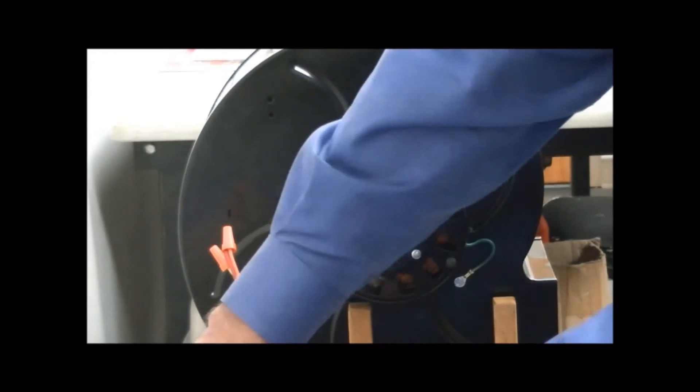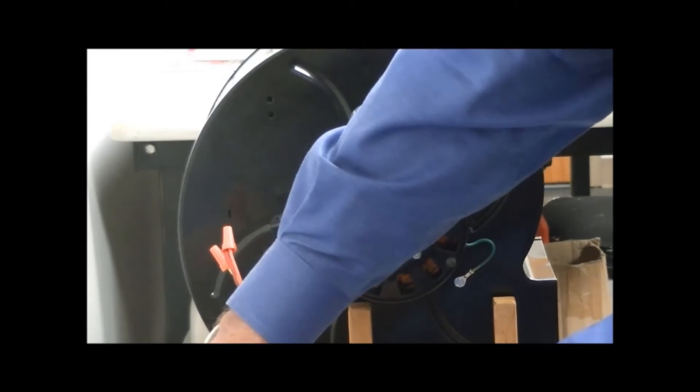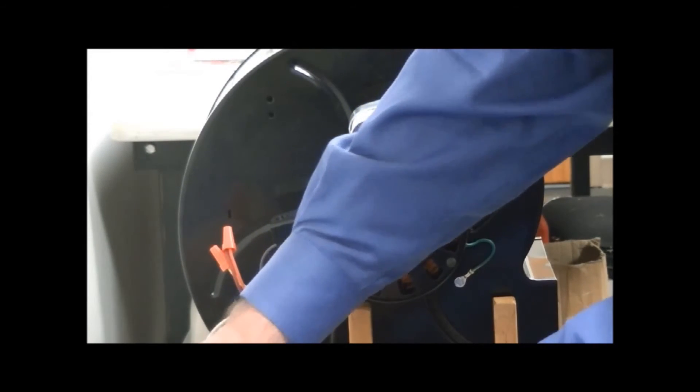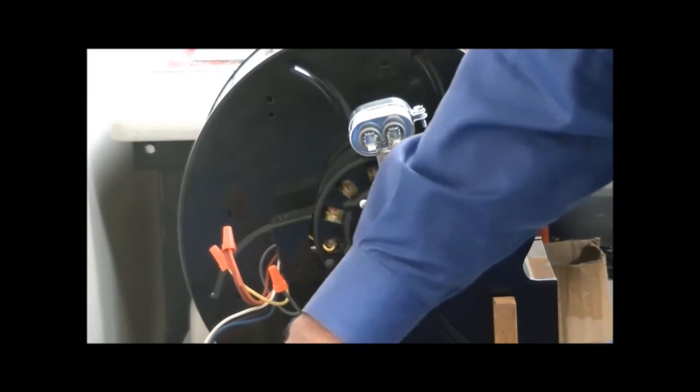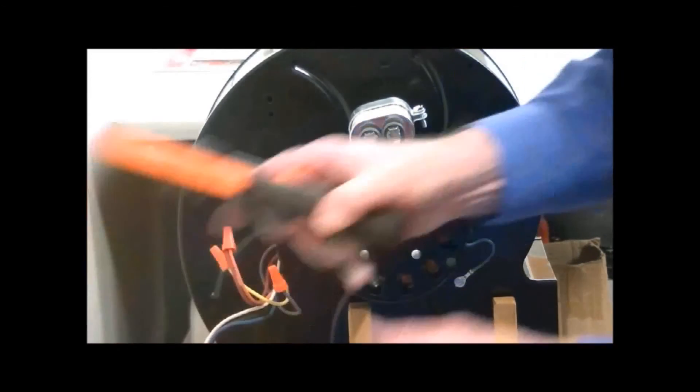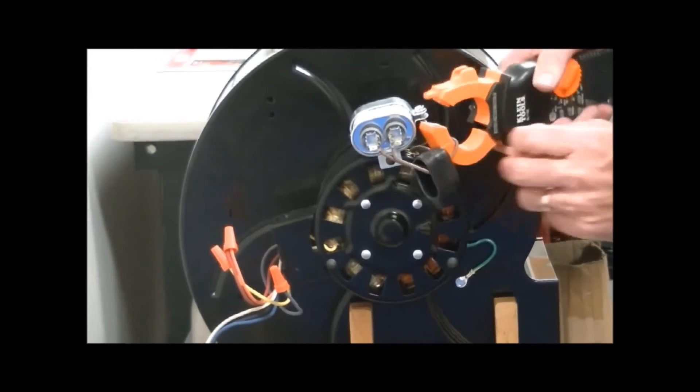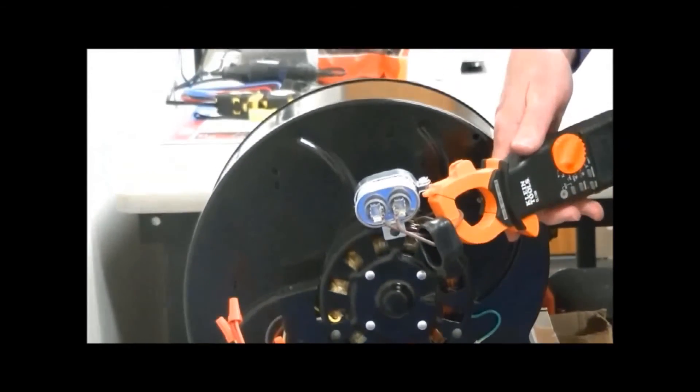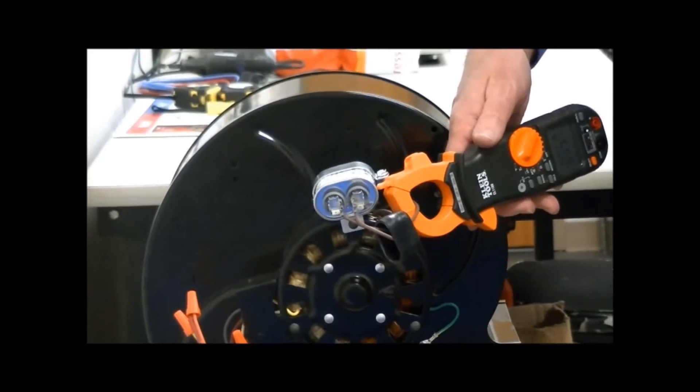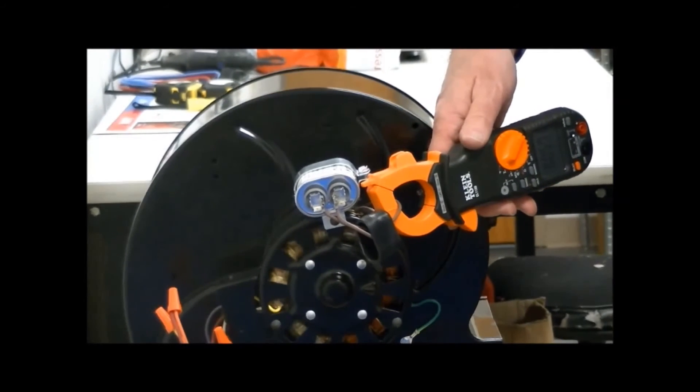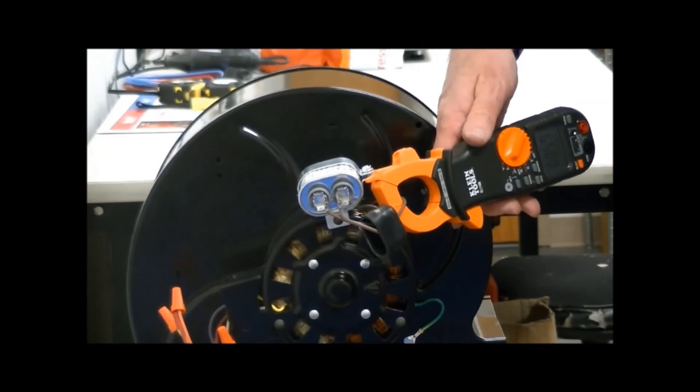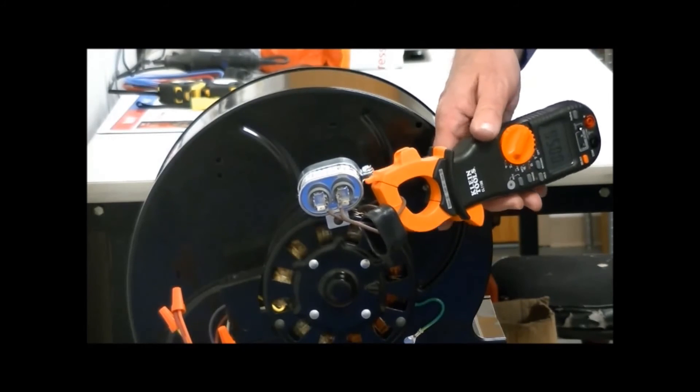Now we'll check the capacitor amps. Set that on amps. Using our clamp, put it over one of the terminals. That will give us 0.57 amps.